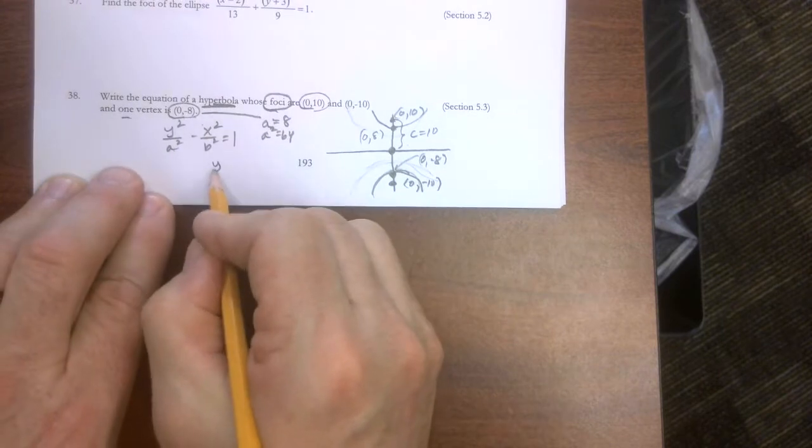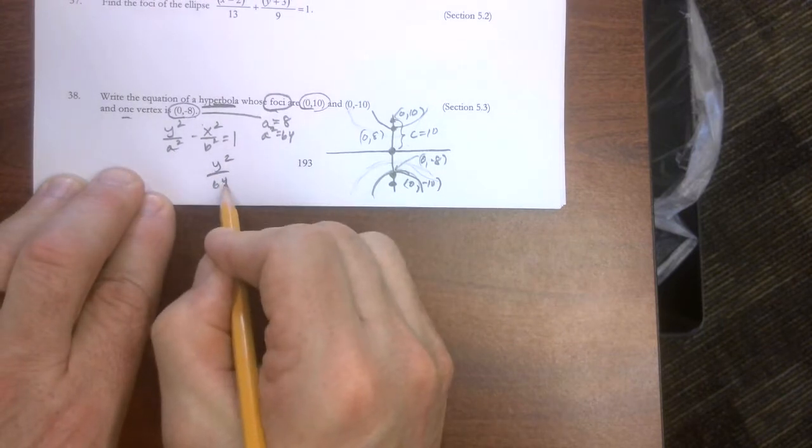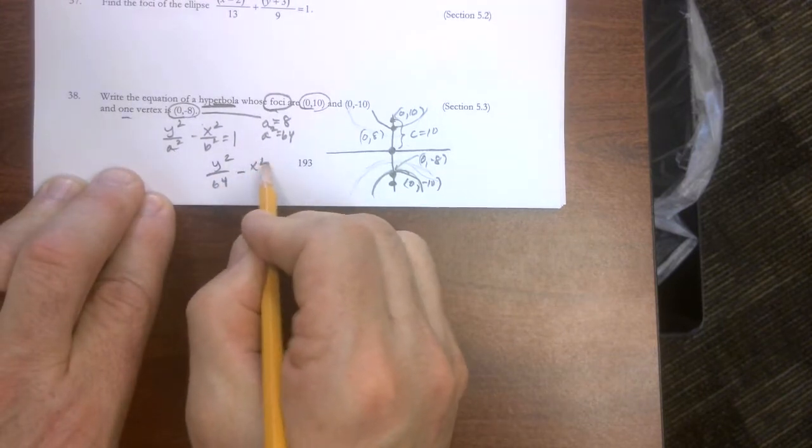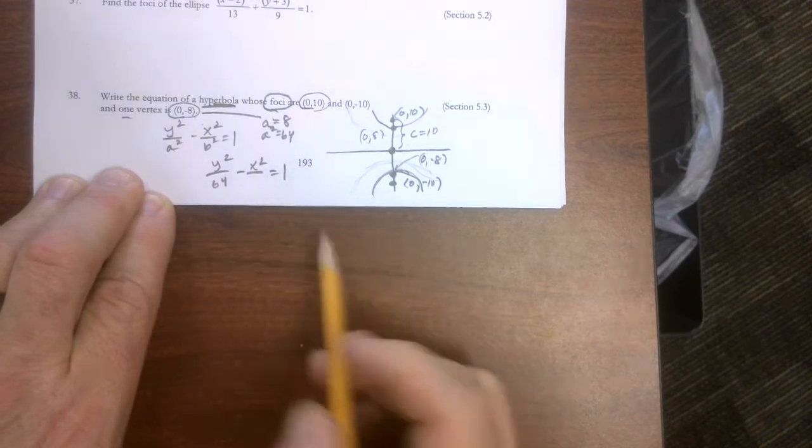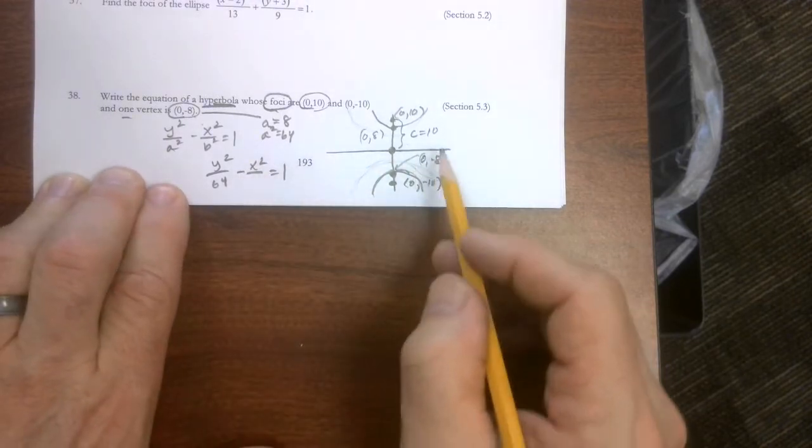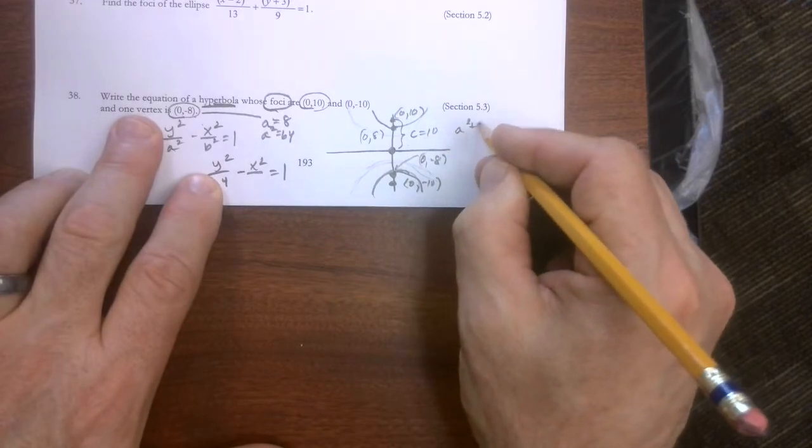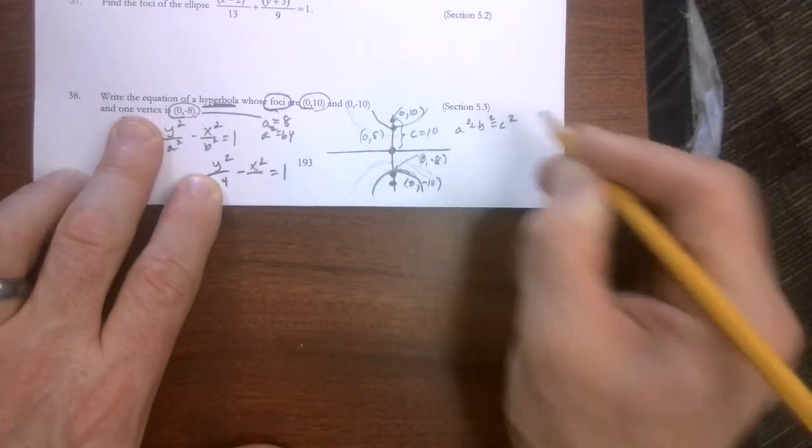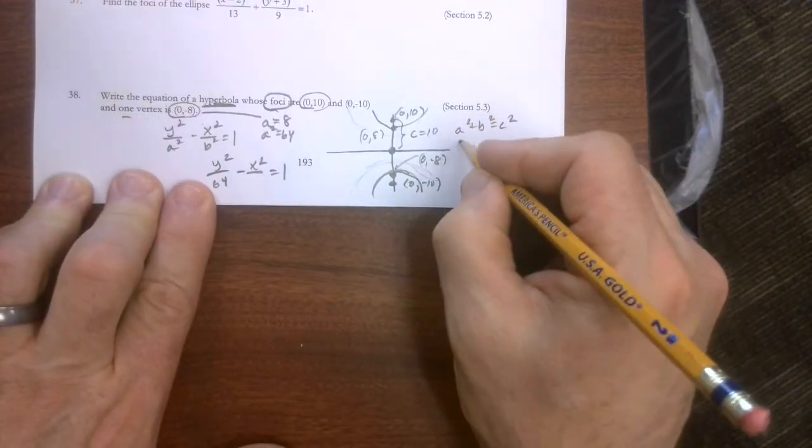So we know we could put that in here. y squared over 64 minus x squared. We've got to find b squared and we'll be done. We know that c is 10.